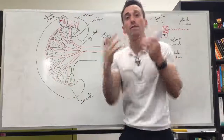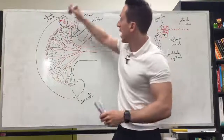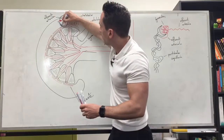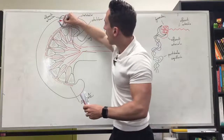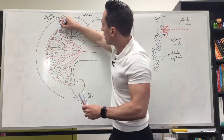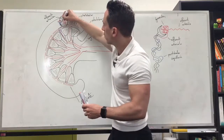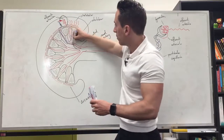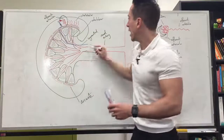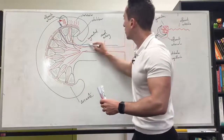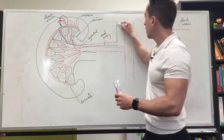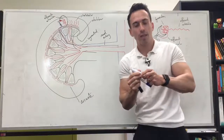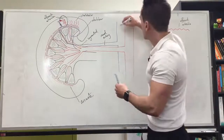Now we're in the venous system of the kidneys, and the naming heads back the same way. We've got interlobular, then arcuate, then interlobar veins. We don't have a segmental vein, but then we turn into the renal vein. The renal vein goes to the inferior vena cava, which goes up to the right-hand side of the heart — the right atrium.